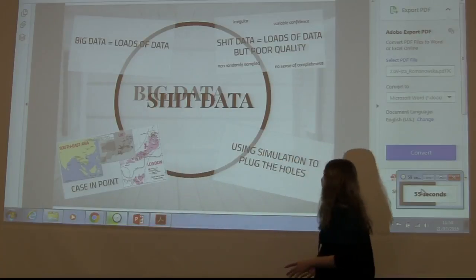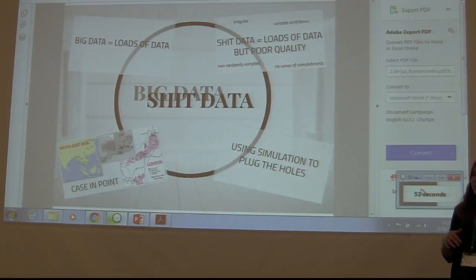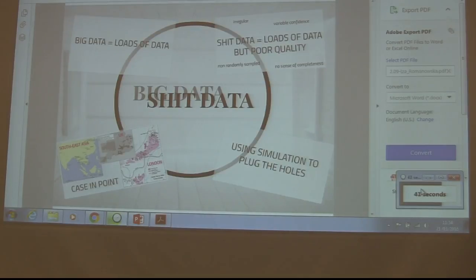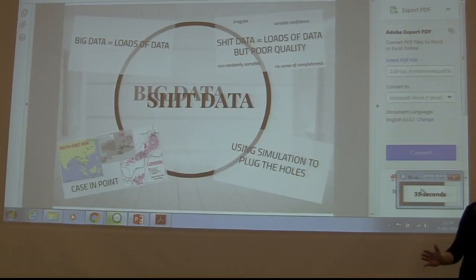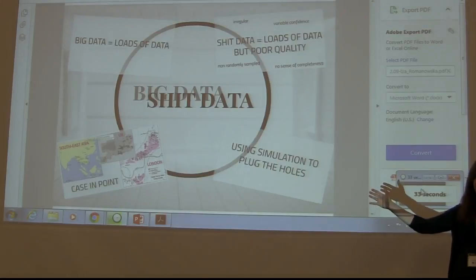So the question is: how do we deal with shit data? My take on that is to create simulations that are completely independent from the empirical record. They represent hypothesis models — basically what people thought the past was. I run them to create artificial records, which I can then compare with whatever data we have, even if it's really bad.